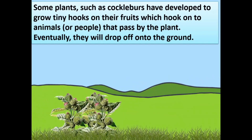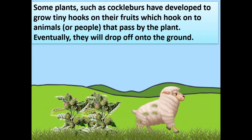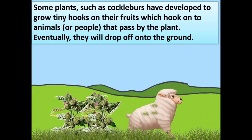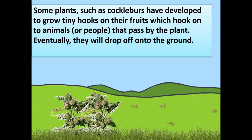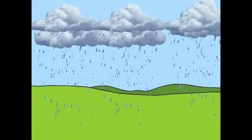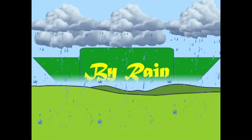Some plants, such as cockleburs, have developed to grow tiny hooks on their fruits, which hook onto the animals or people that pass by the plant. Eventually, they will drop off onto the ground.